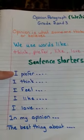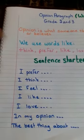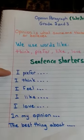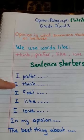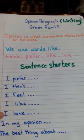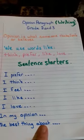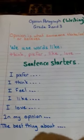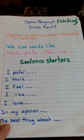For example: 'I prefer to drink cold water because it's more fresh.' 'I think summer is more beautiful than winter.' You can also use: I feel, I like, I love, In my opinion. And for 'The best thing about' — for example: 'The best thing about summer is that I can go to the beach every day.'